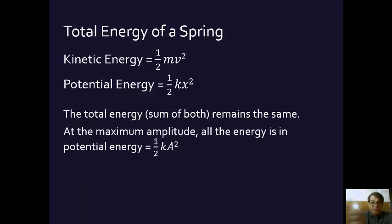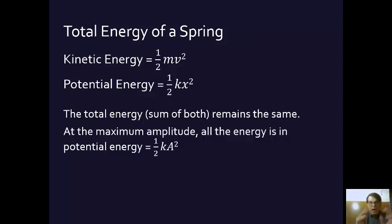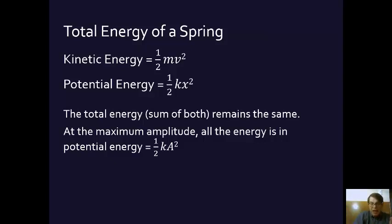We can figure out the total energy of this system because when it reaches its maximum amplitude — when it's moved away from its resting point to its positive amplitude — all of its energy is in potential energy. It's stretched as far as it will go without overstretching. So we can find the maximum energy of the system by substituting A in for x, because when it's at its amplitude, all of its energy is in potential energy.